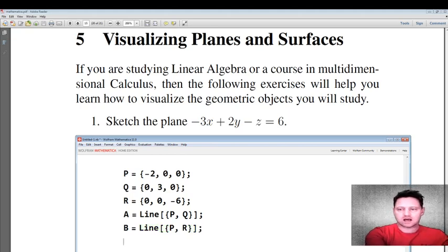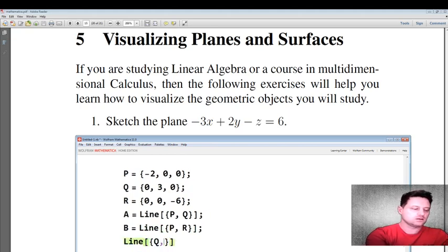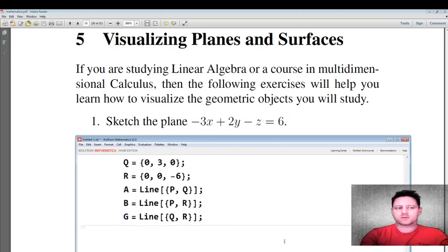And finally, you'll want a line from Q to R. But you can't call this C because uppercase C is protected. So let's call it G. All right, so we can enter these lines into memory. Now they're in memory.